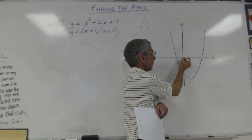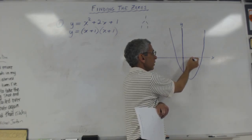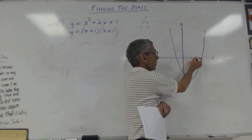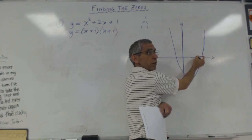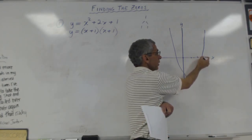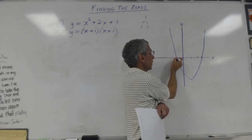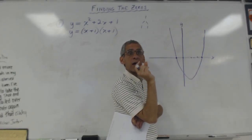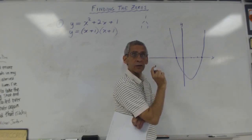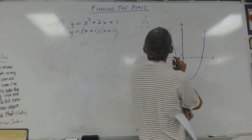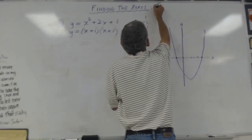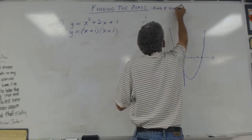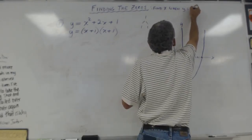So where is y zero? Right here on the x-axis. That's what they mean: find x when y is zero. That's what finding the zeros means — find x when y equals zero.